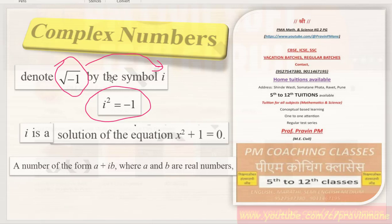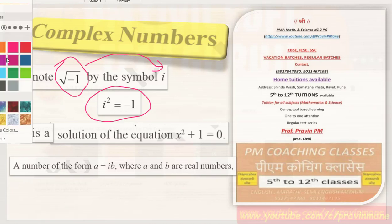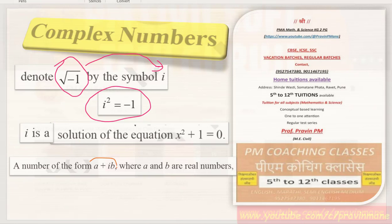We have learned what is meant by complex number — there is iota, i squared is equal to minus one, and the value of i is equal to the square root of minus one. A number of the form a plus ib, where a and b are real numbers, is called a complex number.